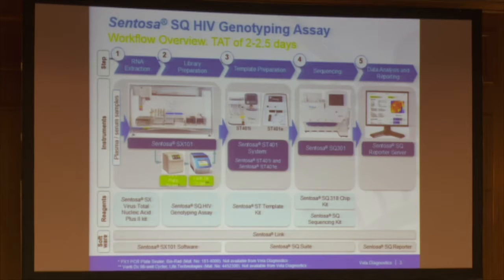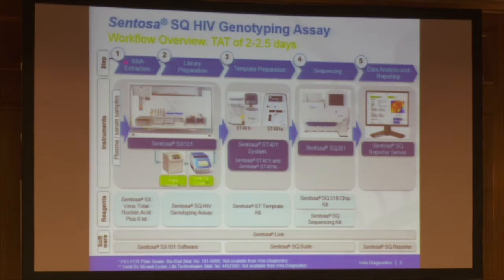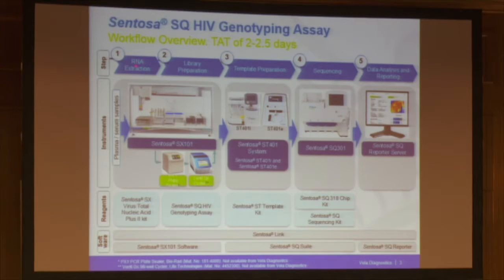When you look at the workflow we developed — this is the first automated workflow developed for NGS to our knowledge — the different steps are shown here. Using HIV genotyping as an example, which is nearly exactly the same for HCV: we start with RNA extraction, then library preparation, template preparation, sequencing, and then the data analysis and reporting system.